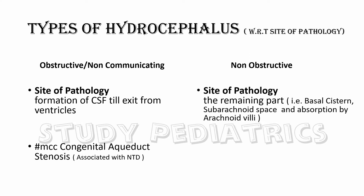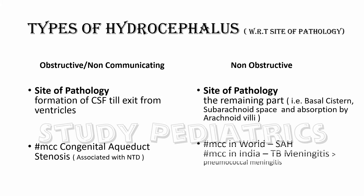In the non-obstructive type, the site of pathology involves the remaining parts — basal cisterns, subarachnoid space, and absorption by arachnoid villi. The most common cause worldwide is subarachnoid hemorrhage, and the most common cause in India is TB meningitis, which is more common than pneumococcal meningitis.